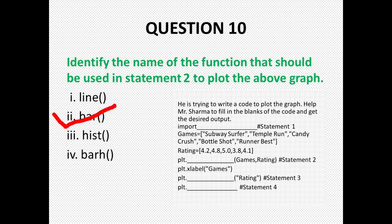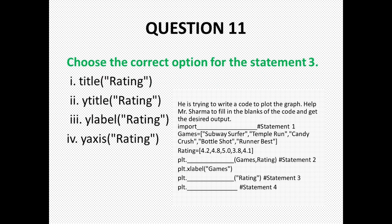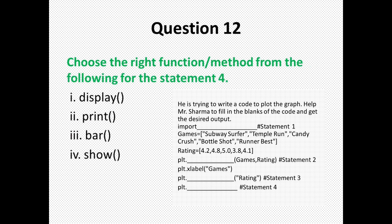Since we need to create a bar graph, we use the dot bar function, so the correct option is bar. For statement 3, it is plt.xlabel('games'), which adds a label to the x-axis. Similarly, statement 3 should add a rating label to the y-axis, so it should be plt.ylabel — the correct option is option 3. For statement 4, we want to display our chart, so the correct option is show — plt.show() is used for displaying the chart.